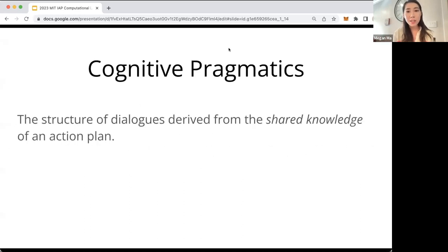And so the introduction of cognitive pragmatics, or a cognitive system view, disrupted the broader field of pragmatics by considering the mental inputs and outputs of communication. Cognitive pragmatics is interested in the structure of dialogue derived from a shared knowledge of an action plan.